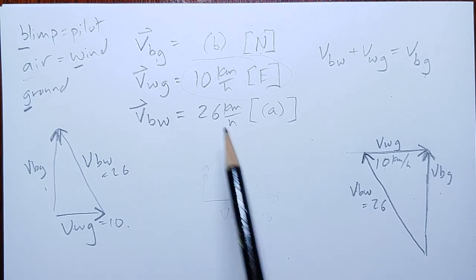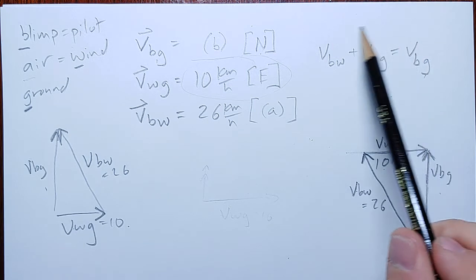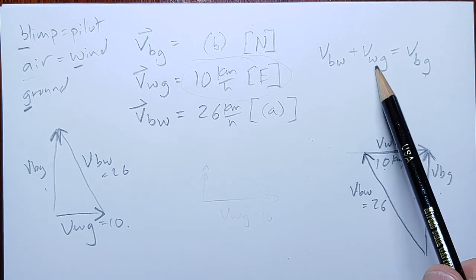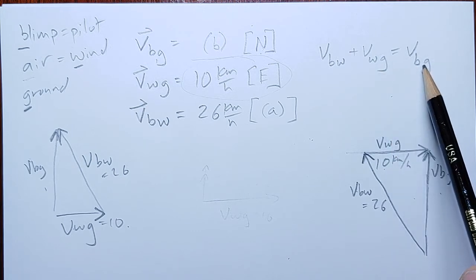vbw is 26 long, 26, 26, and most importantly, they are connected in the right order, hopefully. bw and wg are the ones connected tip to tail. bg is the resultant.